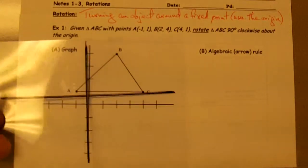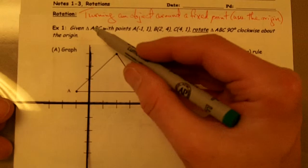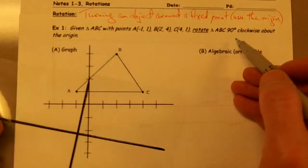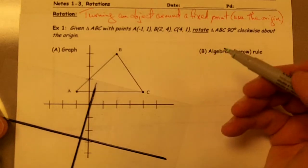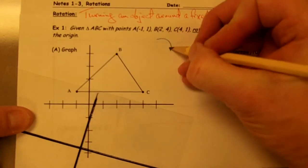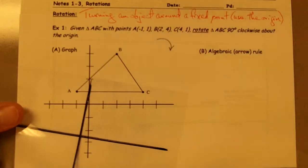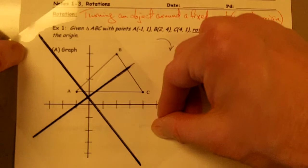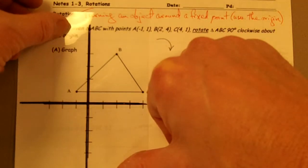So example one, it tells me rotate this triangle ABC, rotate triangle ABC 90 degrees clockwise about the origin. Well, clockwise is going to be this direction, and 90 degrees is basically going to be a quarter turn. So I'm going to take my triangle and rotate it a quarter turn, 90 degrees.